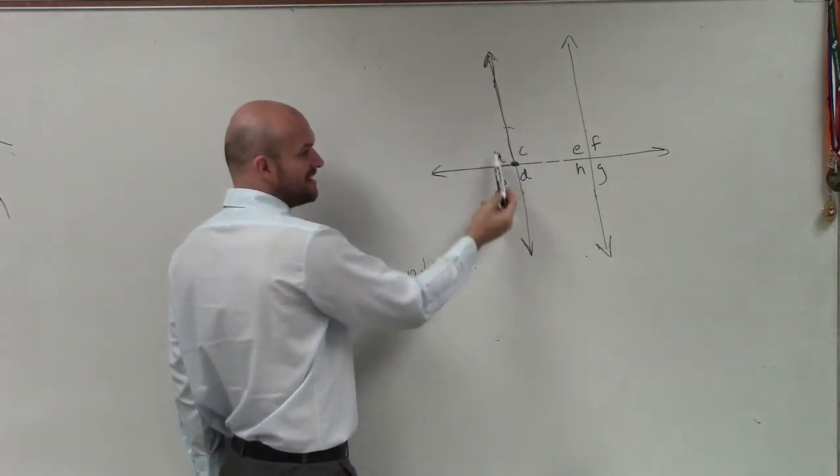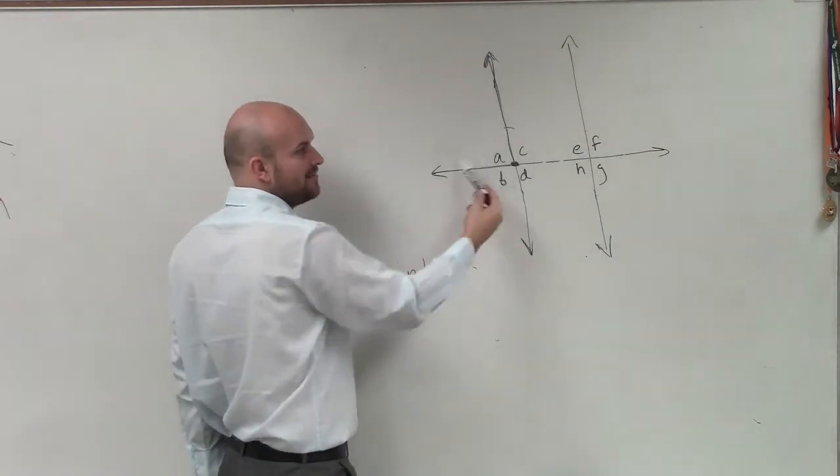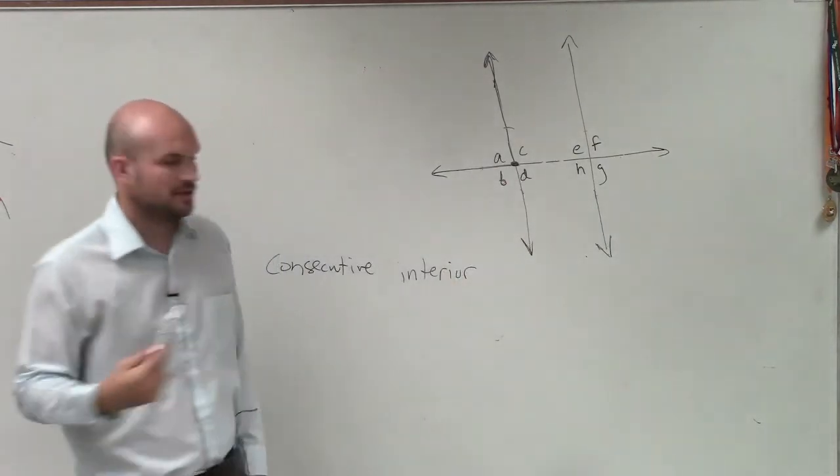it is. You could say two consecutive exterior angles would be like here and here, but these are what we call a linear pair, right? And they're not going to prove parallel lines.